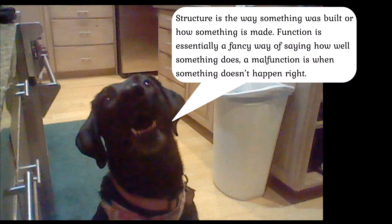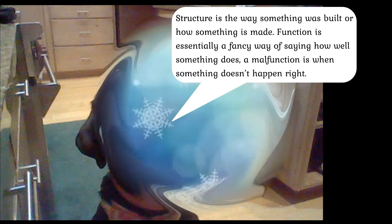Structure is the way something was built or how something is made. Function is essentially a fancy way of saying how well something does a job. A malfunction is when something doesn't happen right.